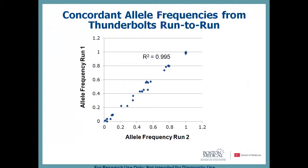The last thing we did to evaluate the Thunderbolts was to look at concordance from run to run — two independent library construction processes and two independent runs on the MiSeq — and again you can see high concordance for the minor allele frequency.